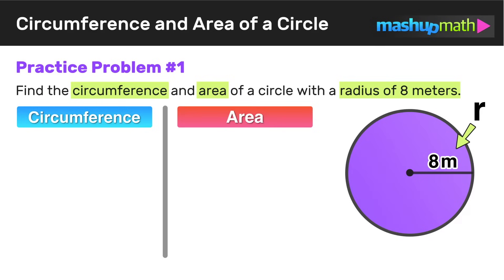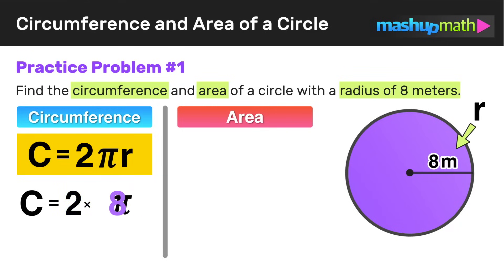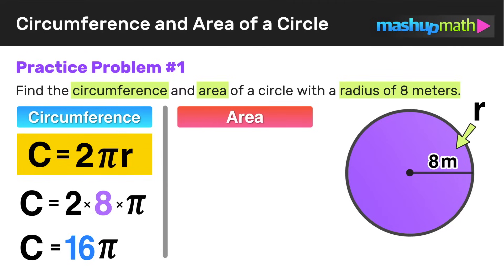Let's start with circumference. The formula is c equals 2 pi r. So in this case, c equals 2 times pi times 8, since we are replacing the radius r with 8. We can use the commutative property of multiplication to rearrange the terms and rewrite this as 2 times 8 times pi. This lets us express our answer in terms of pi: since 2 times 8 equals 16, the circumference equals 16 pi.